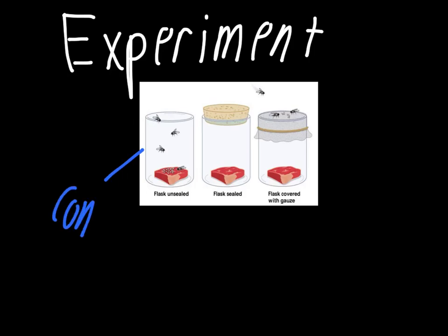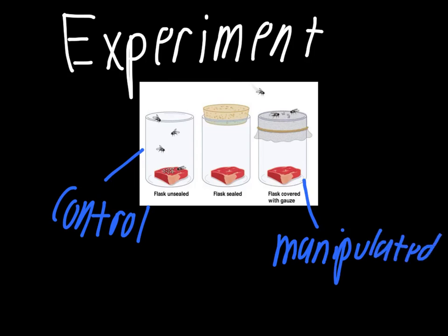The open flask is referred to as his control. The one he changed — putting gauze over the top — is the manipulated variable. The middle picture shows an earlier experiment where he corked off the top of the container, but that setup doesn't allow air into the jar, and people at Redi's time believed that air is where life came from. They would have said the experiment didn't work because the cork blocked the air, not because of the flies. So he ended up using gauze, which kept flies away from the meat while still allowing air in, removing that counterargument.